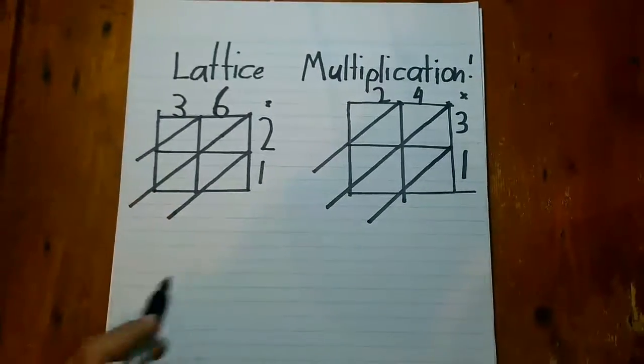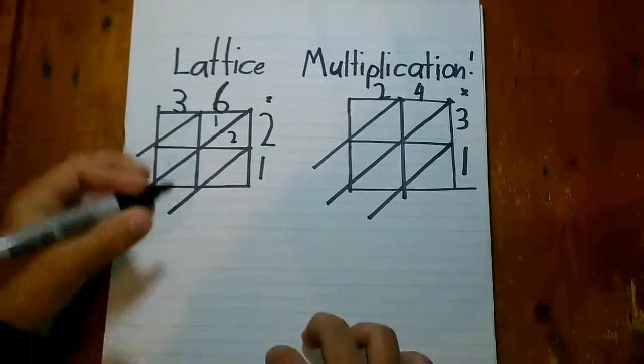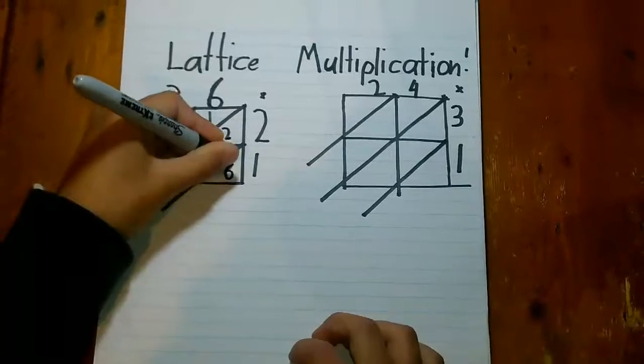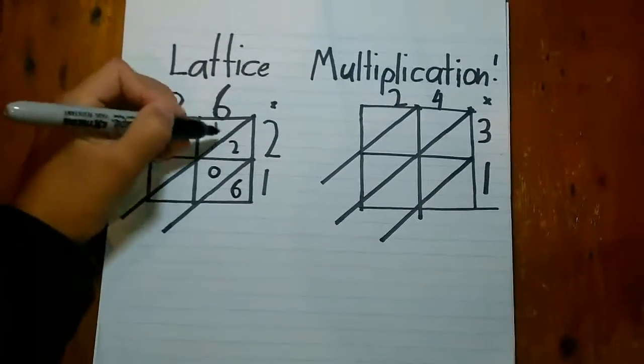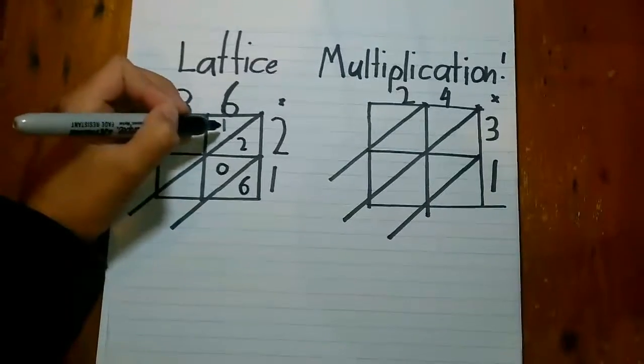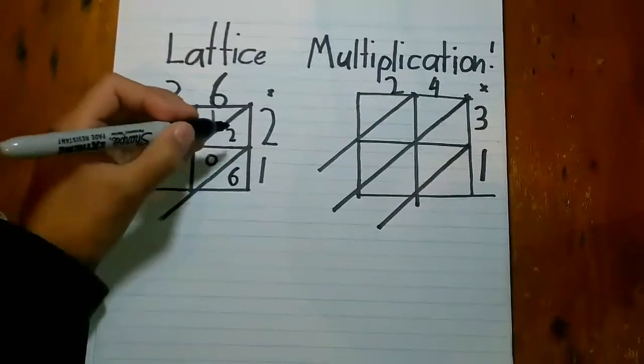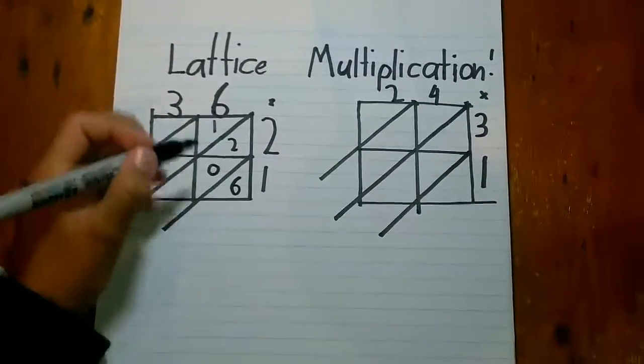6 times 2 is 12, and then 6 times 1 is 6. By the way, the left side is the tens and the right side is the ones. And when it's a one digit number, you just put a 0 there.